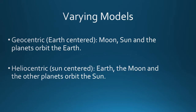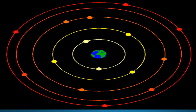The first thing we need to talk about is two different models: the geocentric model and the heliocentric model. The prefix 'geo' means Earth, so the geocentric model has the Earth at the center of the solar system — the moon, the Sun, and the planets orbit the Earth. 'Helio' is a prefix that means Sun, so the heliocentric model is Sun-centered, where the Earth, the moon, and the other planets orbit the Sun.